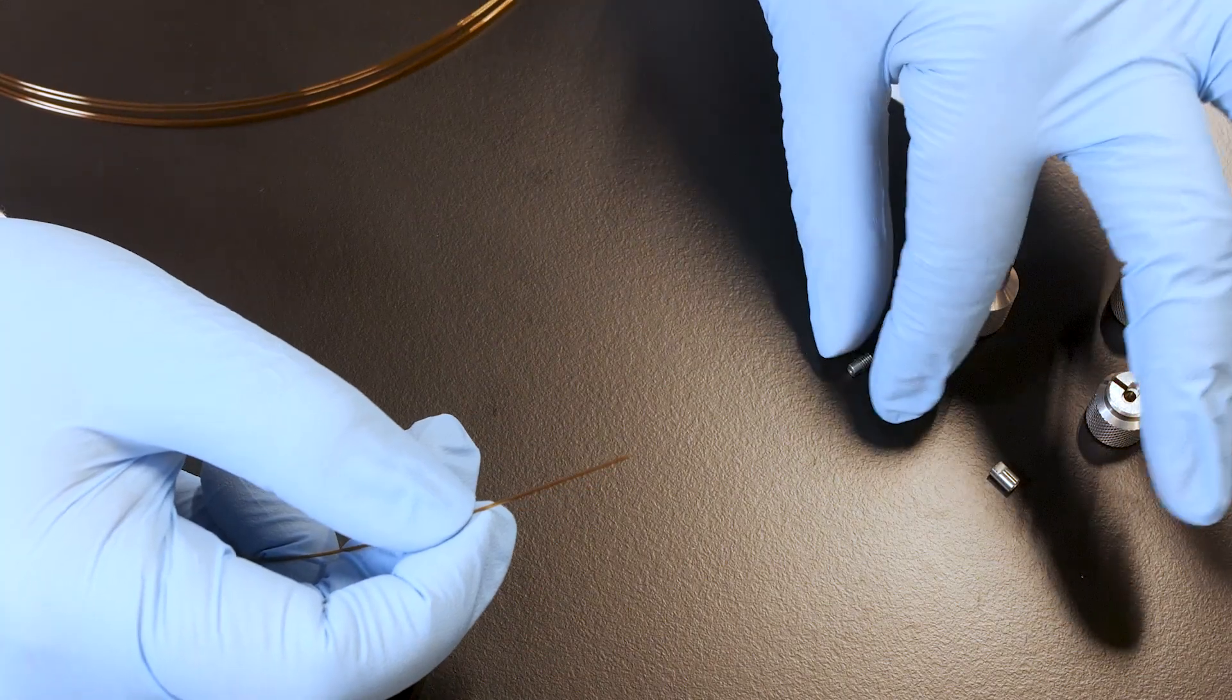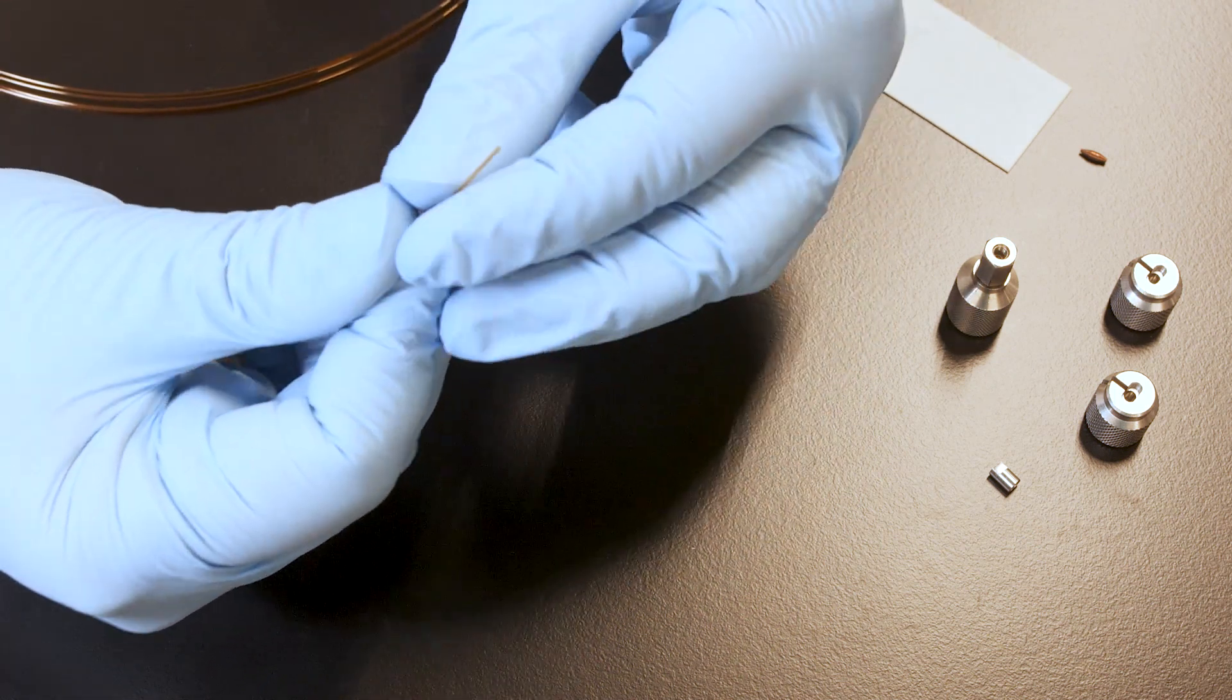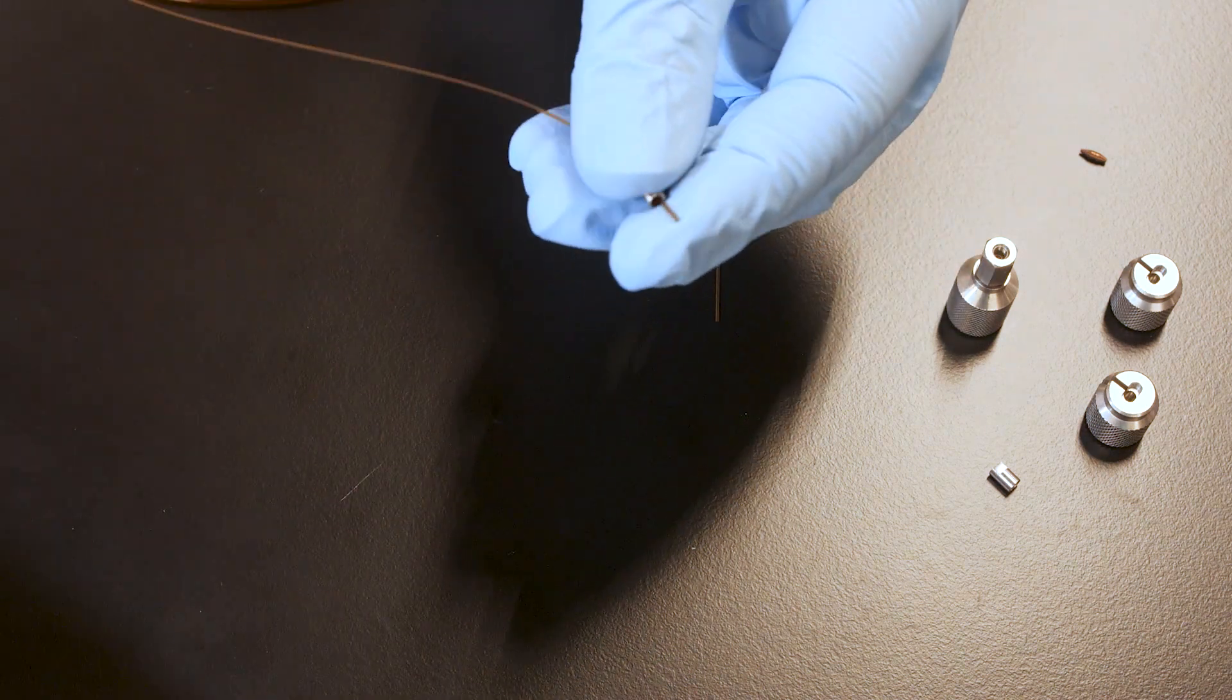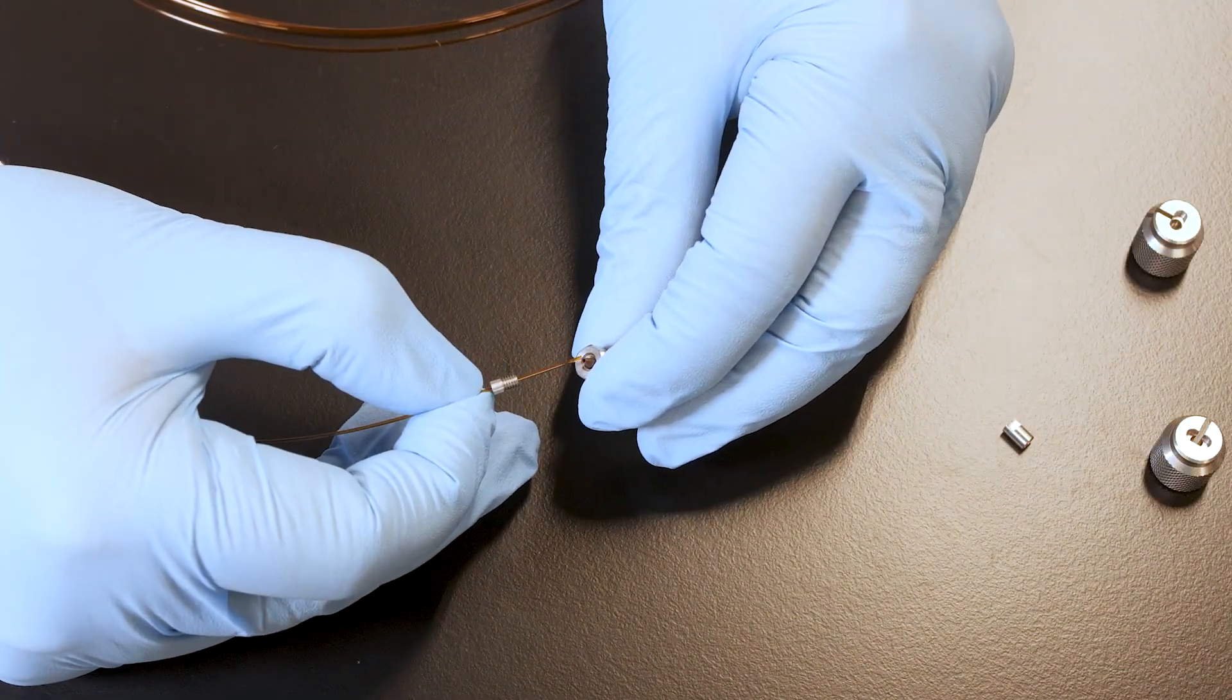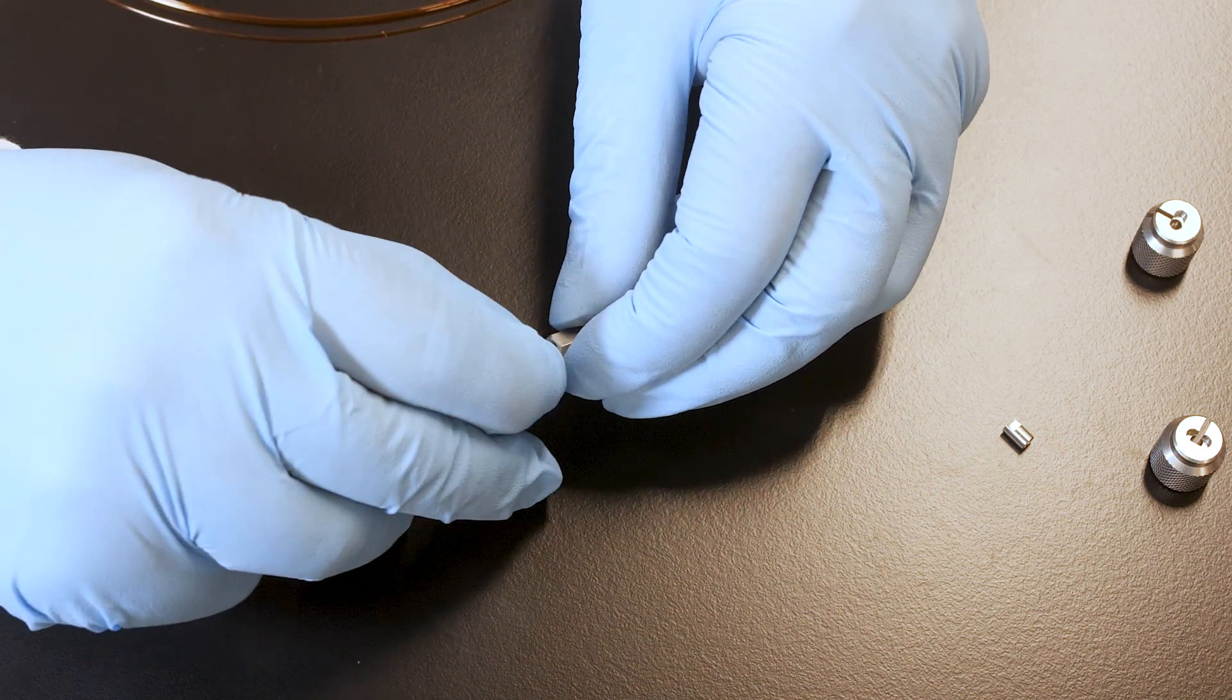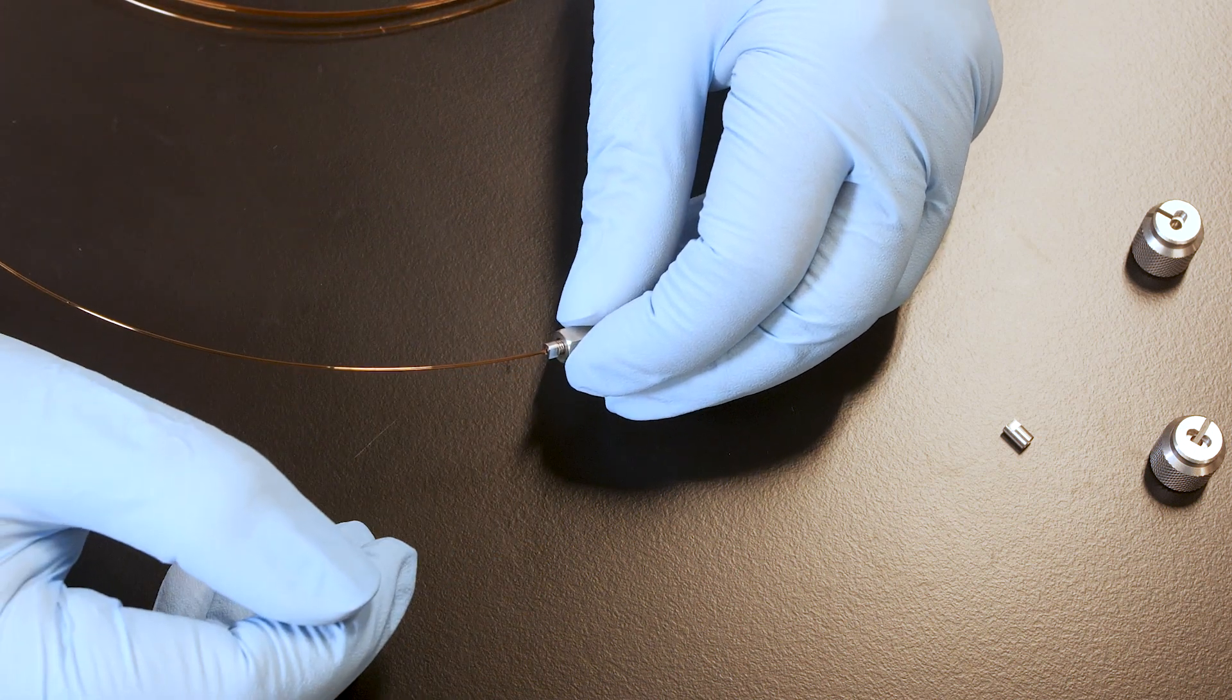Start by sliding the male micro connector onto the column you wish to connect. Prepare the column by cutting a small part of it with the smooth side of a scoring wafer. A clean square cut is essential to minimize dead volume. Insert the column into the double taper ferrule and then screw the male micro connector end fitting into the connection nut.